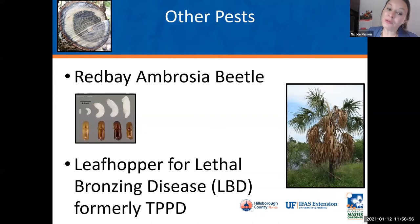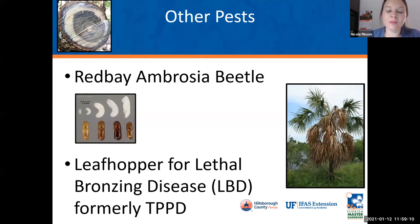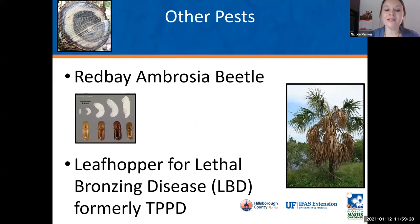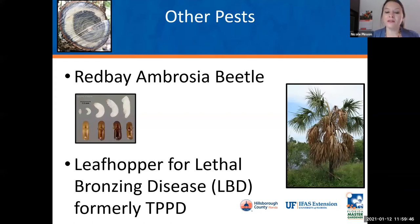Keep an eye out for some newer pests in Florida. The red bay ambrosia beetle causes issues with avocados and anything in the Lauraceae family — very quick dieback, and you have to be careful about how you dispose of the wood. Unfortunately in avocados we really can't treat this. Also, we're studying the leafhopper for lethal bronzing disease, formerly known as Texas-Phoenix palm decline. Scientists at UF are working to figure out which leafhopper is responsible for transmitting this disease, and the list of host palms has increased. Get assistance early if you notice decline in your palm trees.